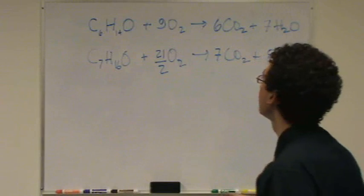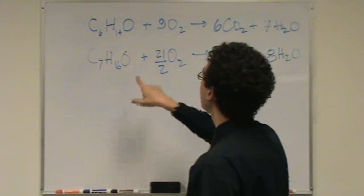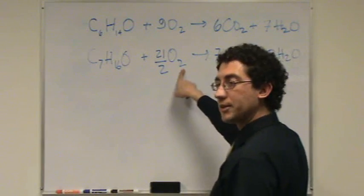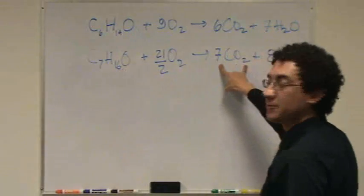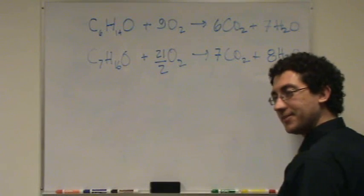I got to put 21 halves. So let's just double check, make sure everything's okay. 1 plus 21 halves times 2, that's 21. Plus 1 is 22. 7 times 2 is 14. Plus 8 is 22. Is that okay? Okay.